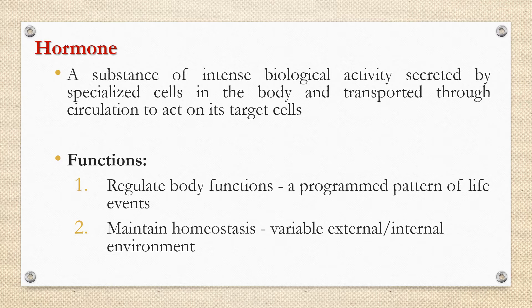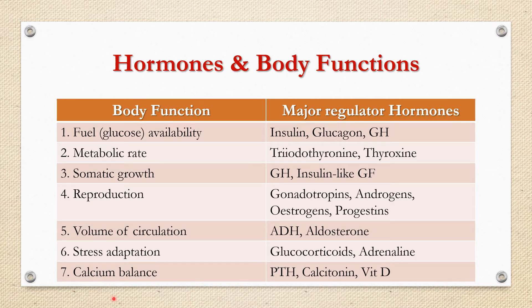The hormones regulate body functions to bring about a programmed pattern of life events like growth, development, metabolism, reproduction, aging, etc., and also maintain homeostasis despite various external and internal environmental changes. For example, availability of fuel (glucose) is controlled mainly by insulin and glucagon. Insulin decreases blood glucose level while glucagon and growth hormone increase it. Metabolic rate is controlled by thyroid hormones thyroxine and triiodothyronine, while adaptation to stress is controlled by glucocorticoids and adrenaline.